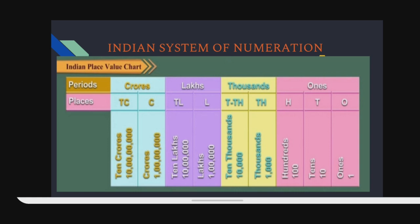The second period is thousands. It has 2 places: thousands and ten thousands. The third period is the lakhs period. It has 2 places: lakhs and ten lakhs. The fourth period is the crores period. It has 2 places: crores and ten crores.